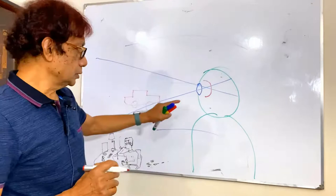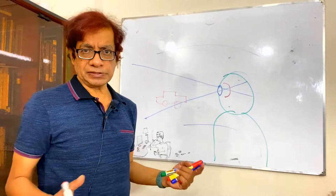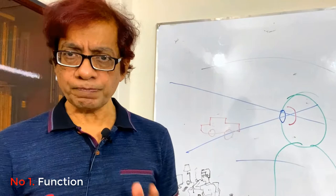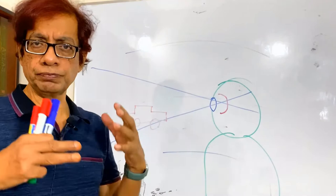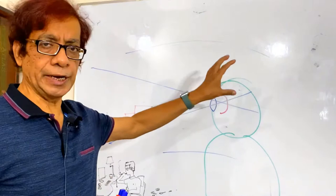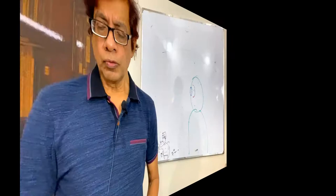What is the function of retina? Let us first summarize. The number one function, the topmost function, is obviously the capturing of light — the electromagnetic wave which forms the visible part of the spectrum. Retina has the capability to capture this light.